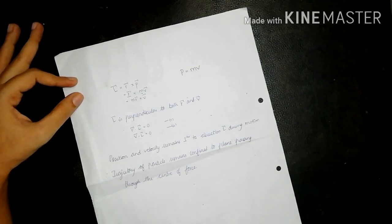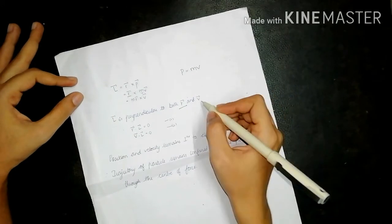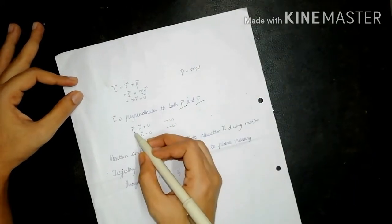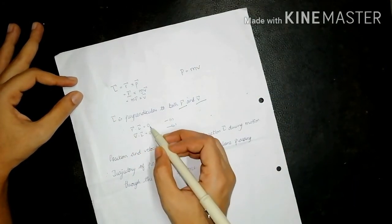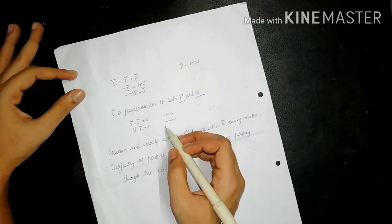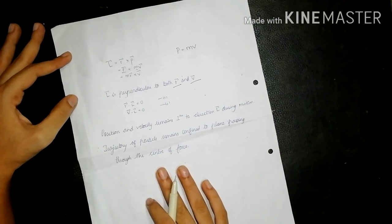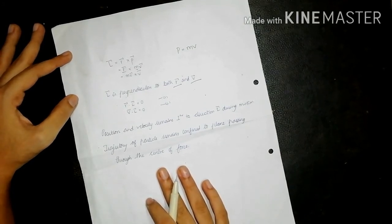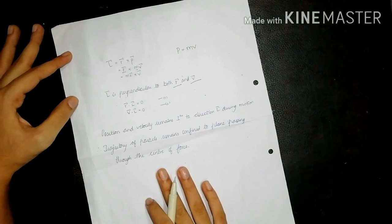Now, l bar is perpendicular to r bar and v bar. So r bar dot l bar will also be equal to 0, and v bar dot l bar would also be equal to 0. Thus, we can say that the position and velocity remains perpendicular to the direction l bar during motion.